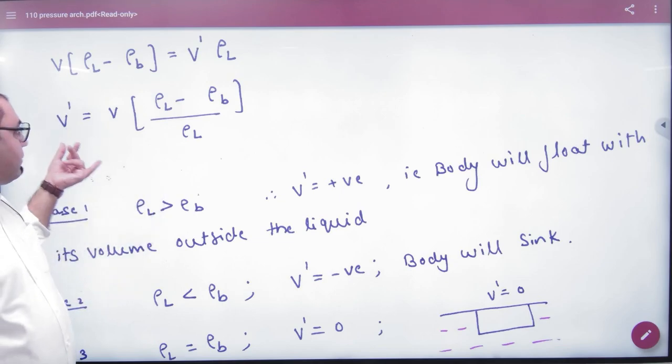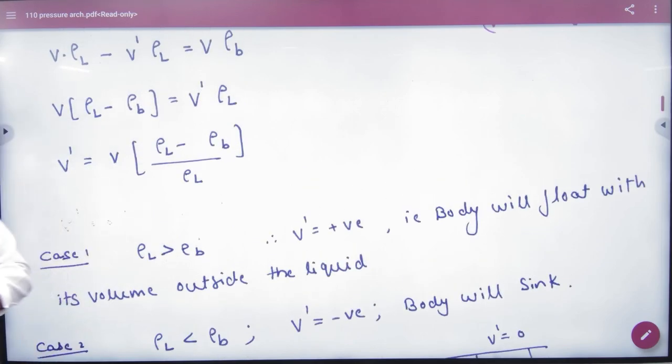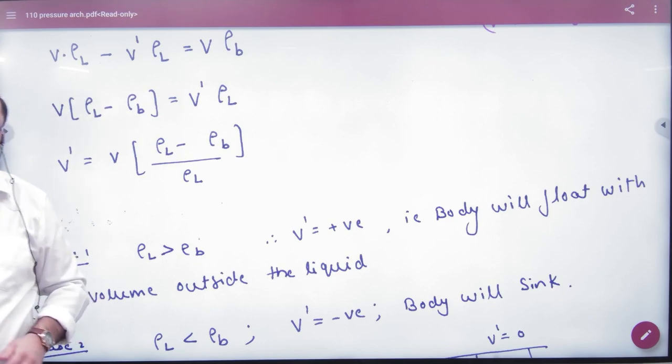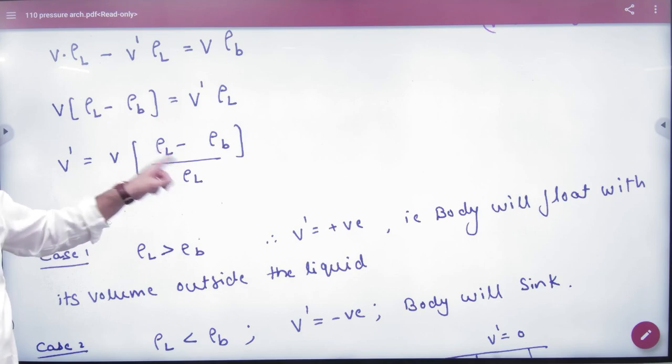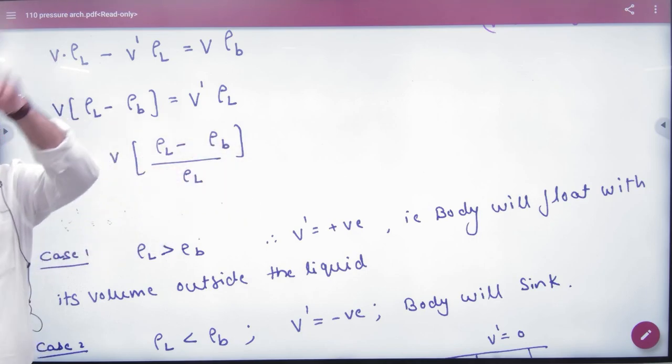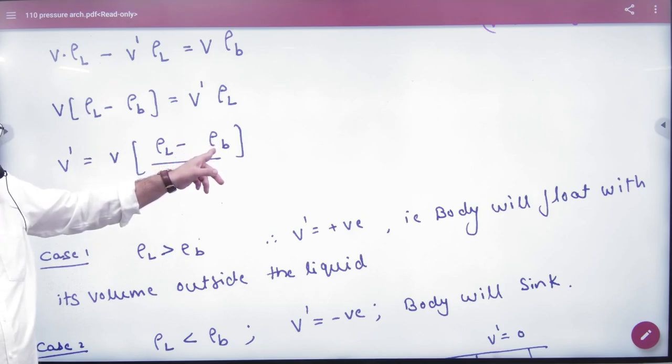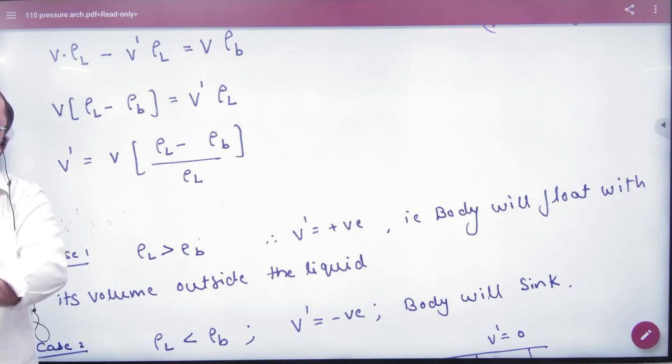If body density is greater than liquid density, then the body will float. But if the body density is greater than liquid density, then V' will be negative and it will start to sink. So if the body density is greater than liquid then the body will sink.